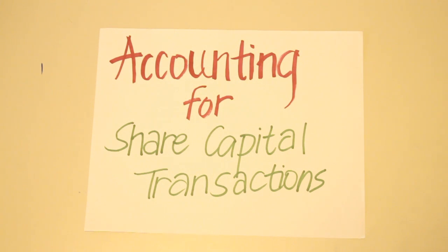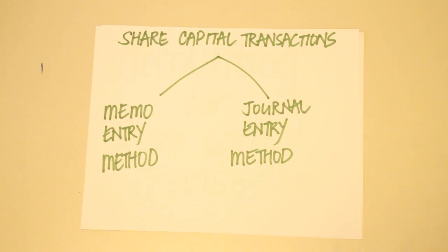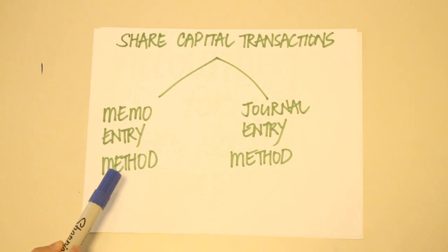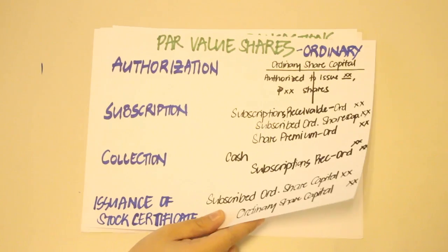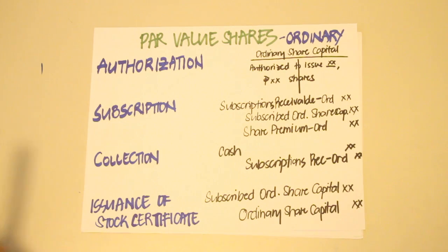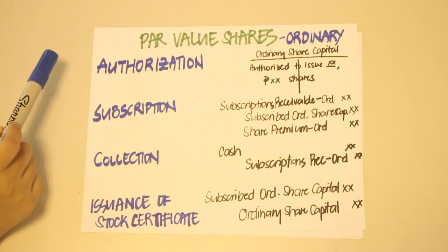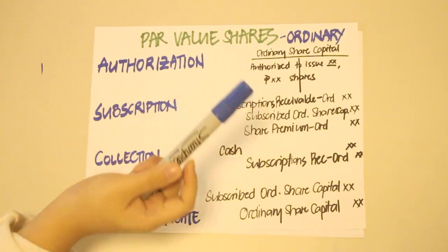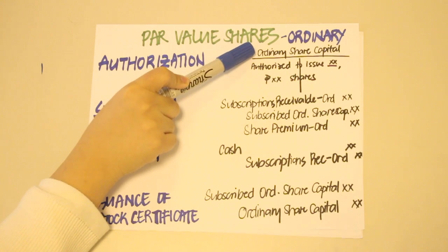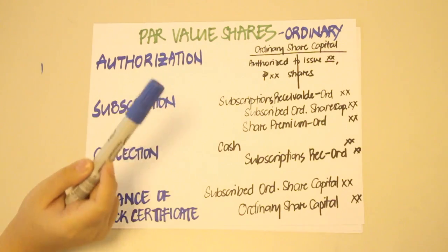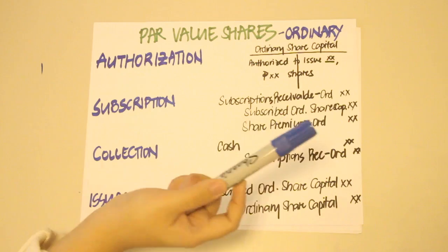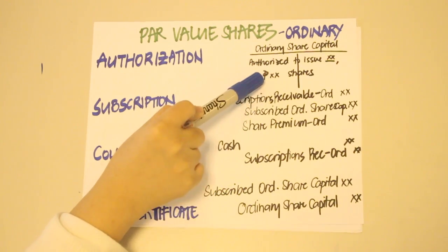Today we're going to be talking about accounting for share capital transactions. When accounting for par value shares, we can either use the journal entry method or the memo entry method. In this video, we will only focus on the memo entry method, which is more commonly used. The four most basic transactions involving par value shares are authorization, subscription, collection, and the issuance of stock certificates. For authorization under the memo entry method, we simply make a T-account and label it according to the type of stock — here, ordinary share capital — and put a memo stating the number of authorized shares and the par value.